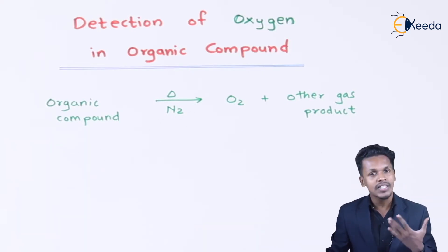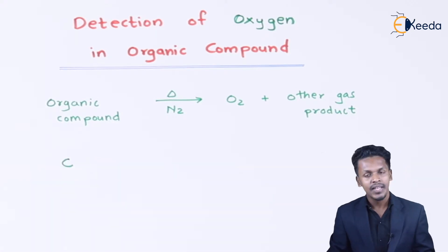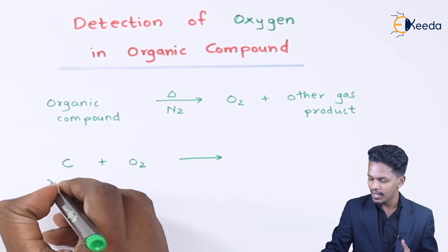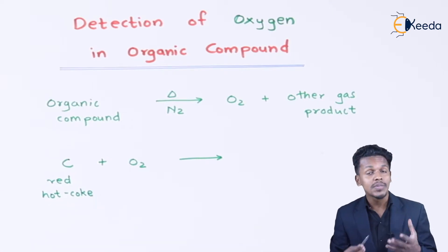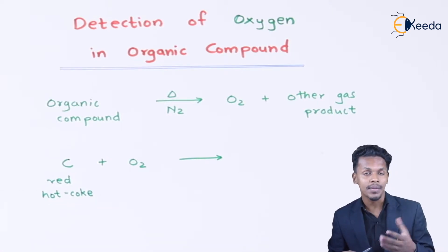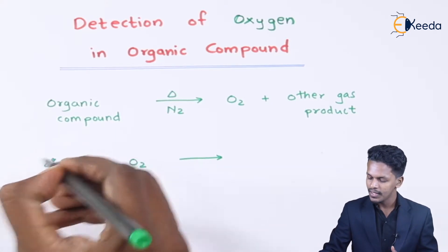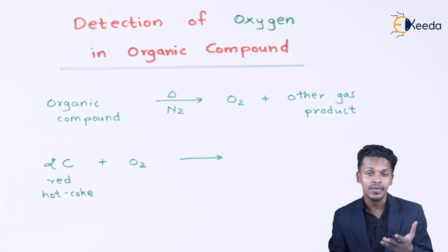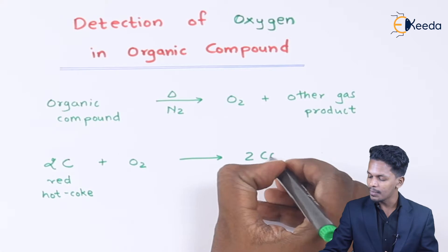The oxygen that has been produced is passed through red hot coke, and coke is nothing but carbon. Whenever carbon is treated with oxygen, it will produce carbon monoxide. Balancing the equation: 2 moles of carbon react with 1 mole of oxygen gas to give 2 moles of carbon monoxide.